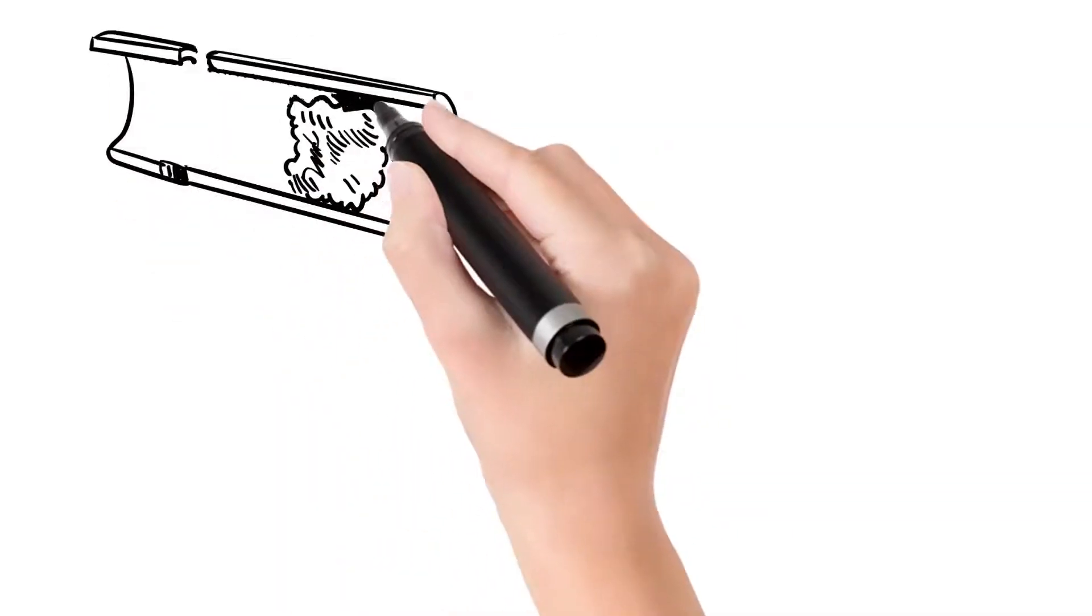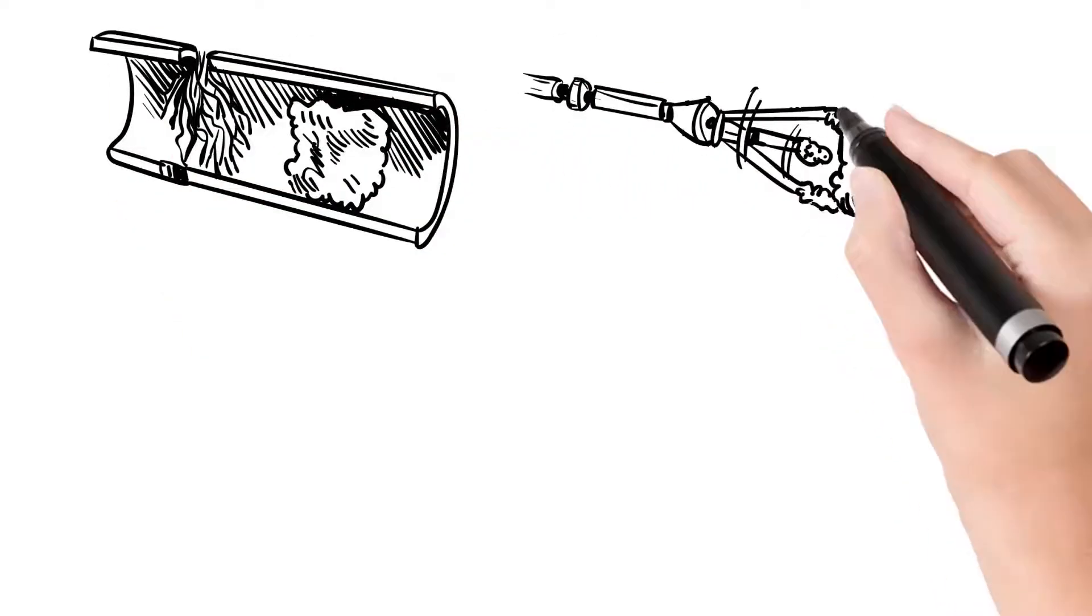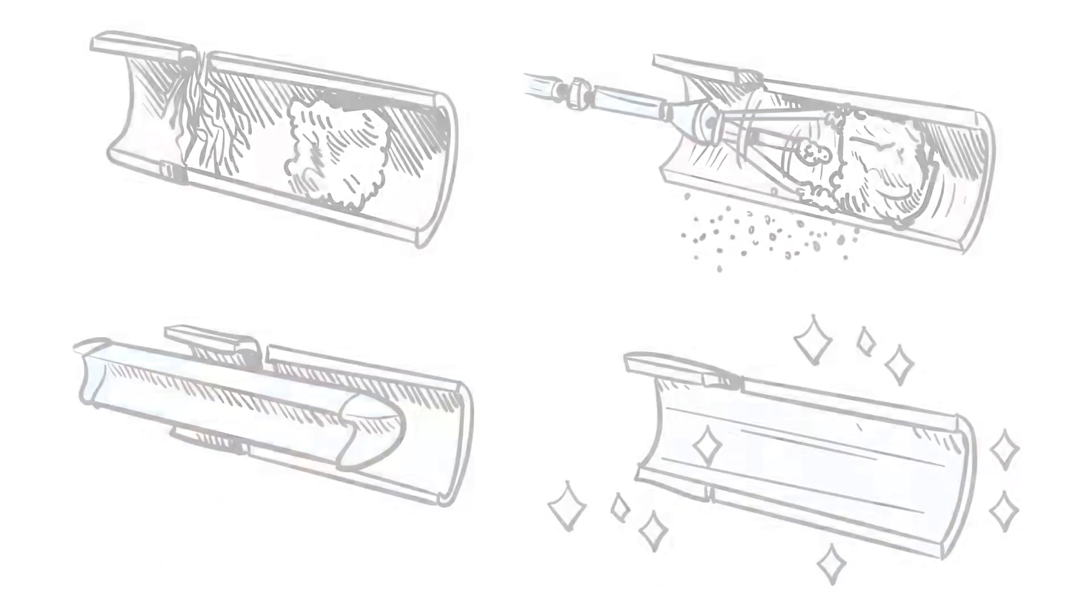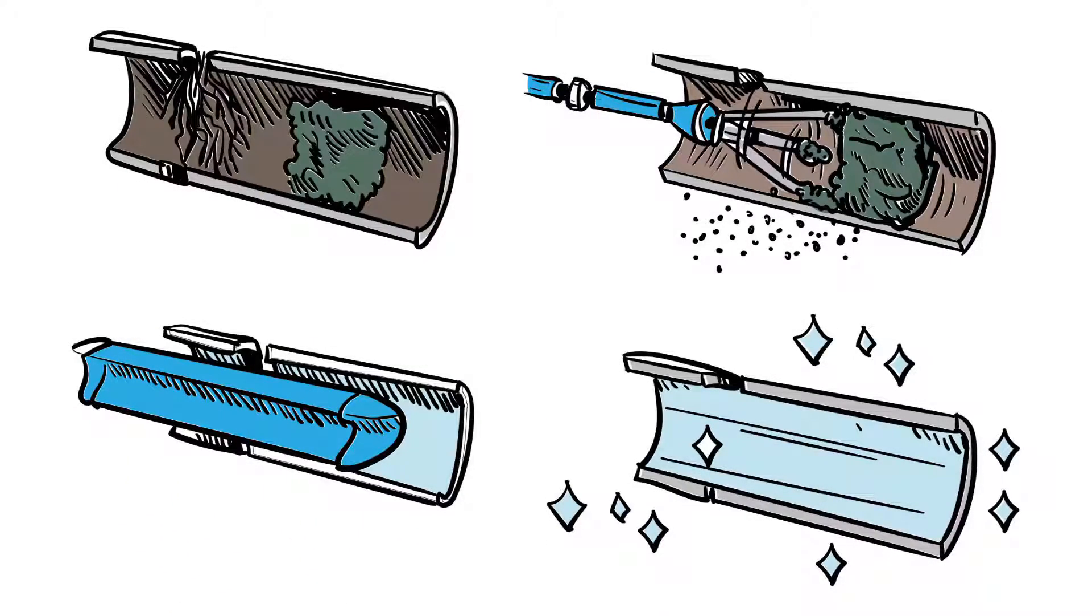Our state-of-the-art tools let us clear the pipe back to its original diameter, then line it inside, essentially creating a new pipe inside the old one.